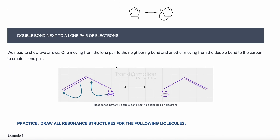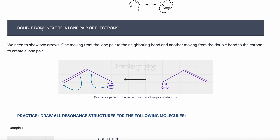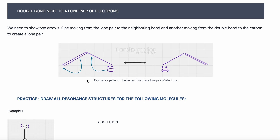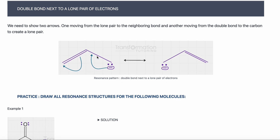The second resonance pattern we see a lot is a double bond next to a lone pair of electrons. If we have a double bond next to a lone pair of electrons, it does not have to have a minus charge — in this case it does, but it doesn't have to. If we see a double bond one carbon away from a lone pair, that is our second resonance pattern. We need to show two arrows: one from the lone pair to make the double bond, and one from the double bond to make a lone pair.